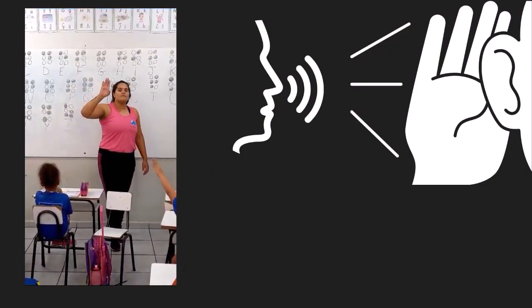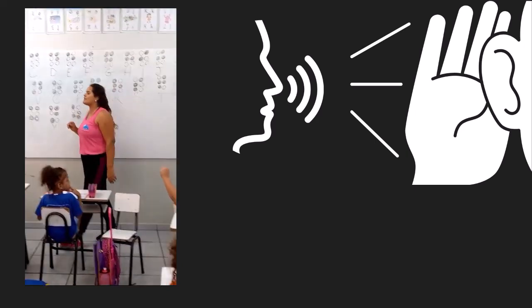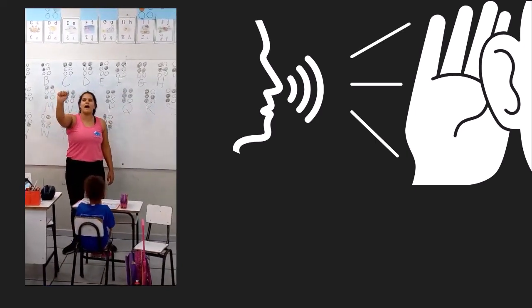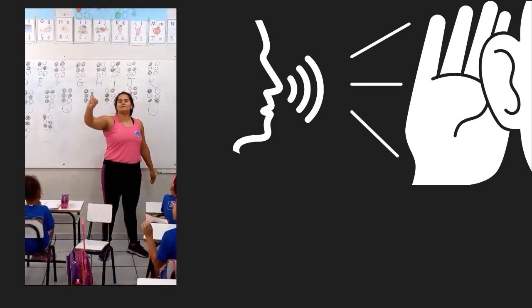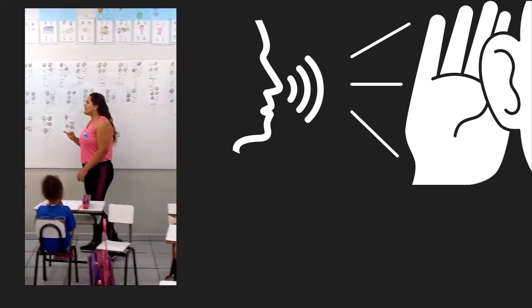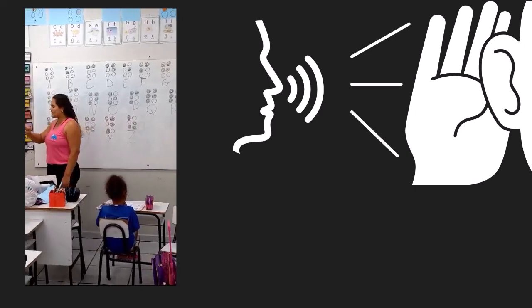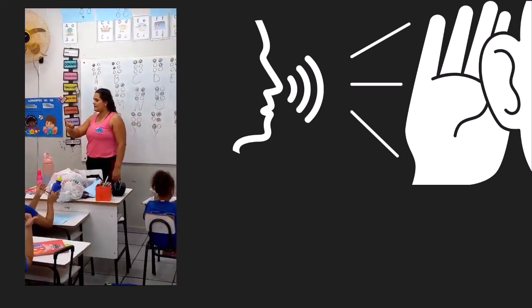In this video, we see Luani in his classroom teaching the manual signs of letters in front of a blackboard filled with Braille symbols. Additionally, we created letters using recyclable materials that could be touched and manipulated.